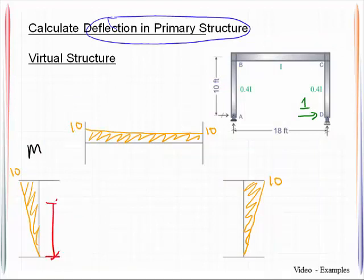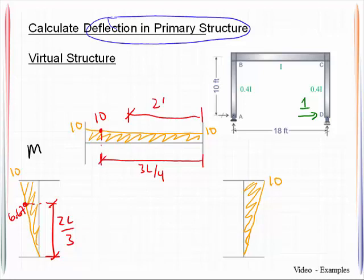We're going to come up here, that two-thirds L, figure out what that value is there, using similar triangles. 6.67 is what I will get. I also will get this here at three-quarters L. Get that value there of 10. I'll come over here at two-thirds L. Get that value of 10. And this one doesn't get used because the big M over EI diagram is zero.